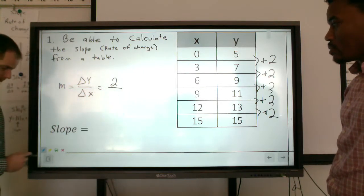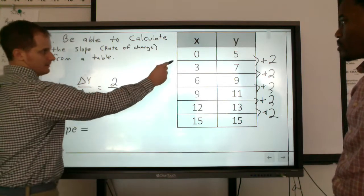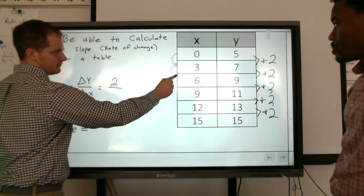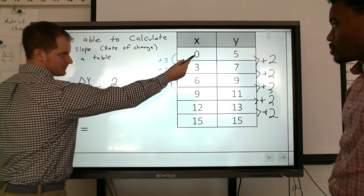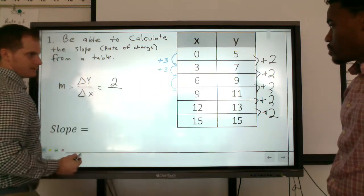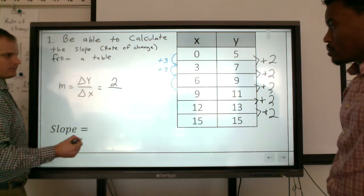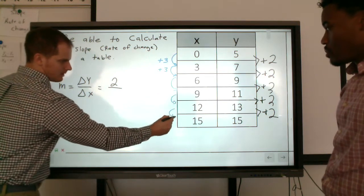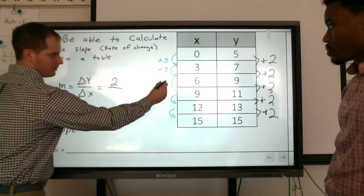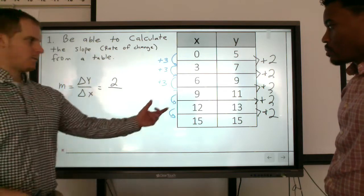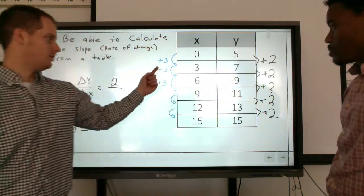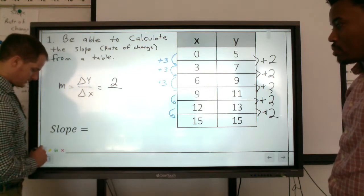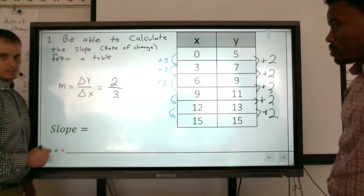At the same time, if you look at the x's, our x values we're actually increasing by plus 3. So each time we notice that from 0 to 3 is 3, from 3 to 6 we're adding by 3, and we continue that pattern all the way through. Now when doing this you want to make sure that you understand when we're looking at slope, we're not looking at one specific point, we're actually looking at the actual change. So this idea of 2 and 3, we know that this is going to be 2/3 for our slope.